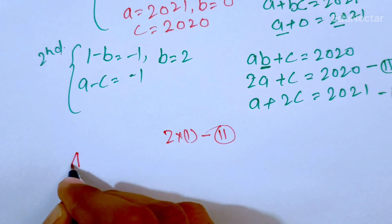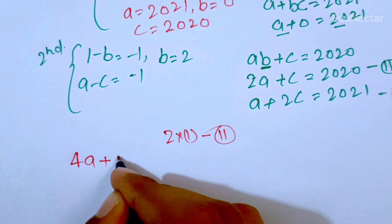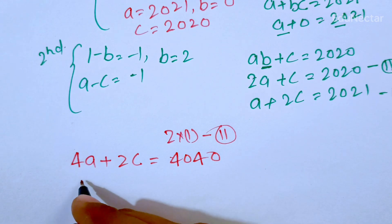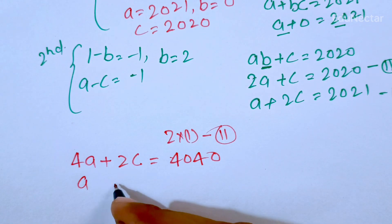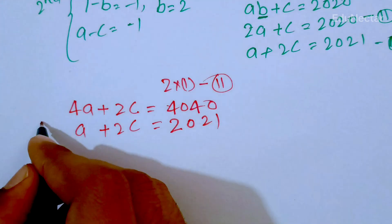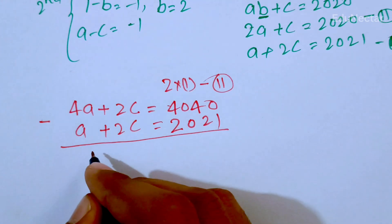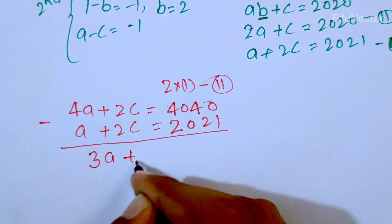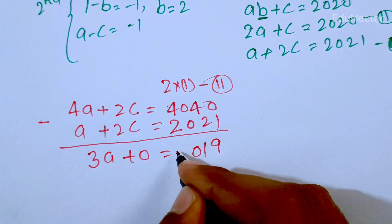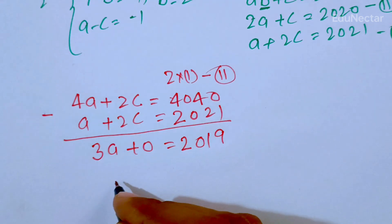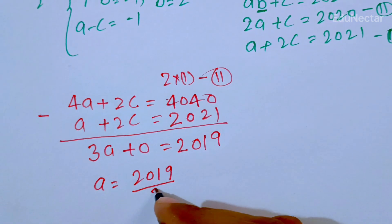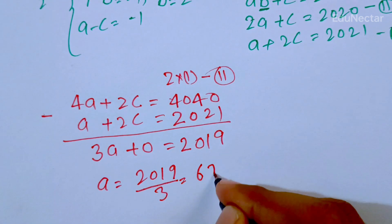Multiplying equation 3 by 2: 4a plus 2c equals 4040. Subtracting equation 4 (a plus 2c equals 2021) from this, we get 3a plus 0 equals 2019. Wait — we get 3a equals 2019, so a equals 2019 divided by 3, which equals 673.